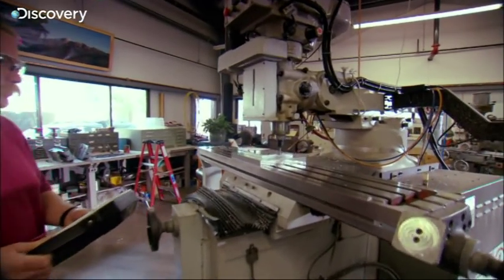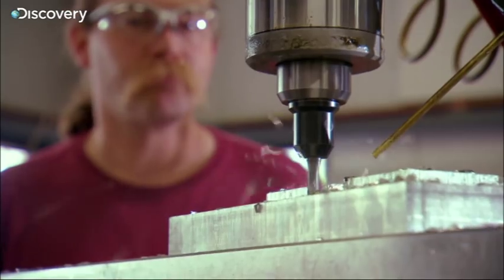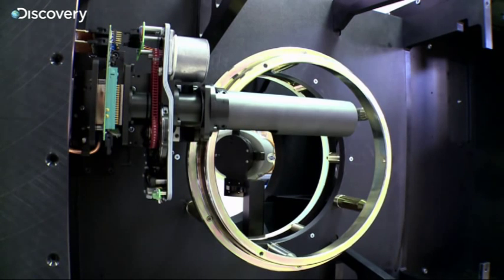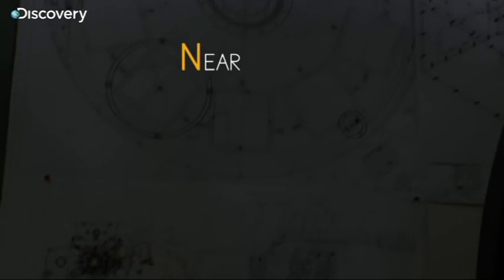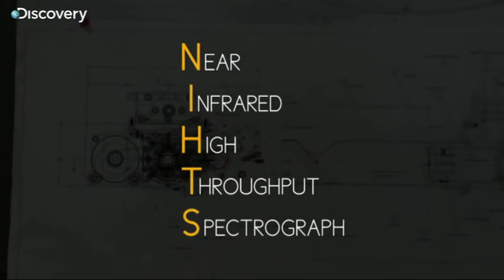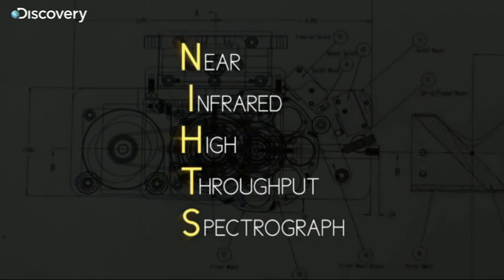To study Kuiper Belt objects, Henry Rowe is building one of the DCT's first instruments. The Near Infrared High Throughput Spectrograph, or NIGHTS for short.